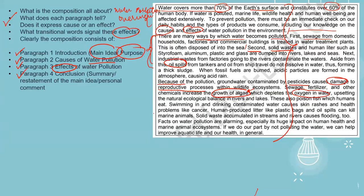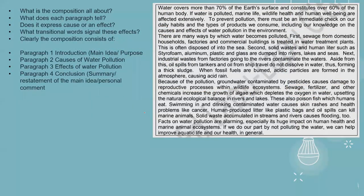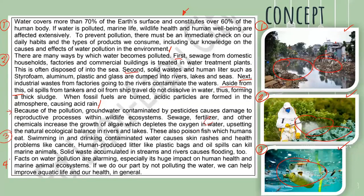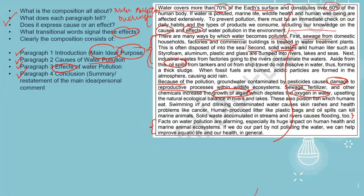Finally, we have paragraph number four: 'Facts on water pollution are alarming, especially its huge impact on human health and marine animal ecosystems. If we do our part by not polluting the water, we can help improve aquatic life and our health in general.' This paragraph wraps up all the information discussed about water pollution from paragraphs one, two, three, and four. So that is the summary of our discussion of how cause and effect works in a composition or text.